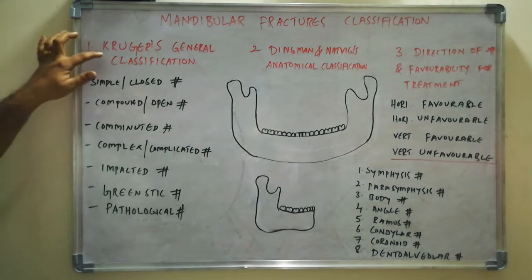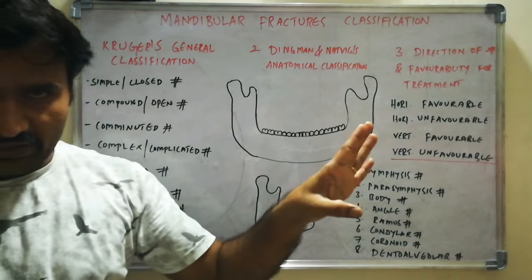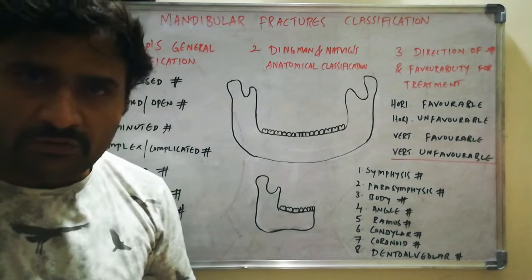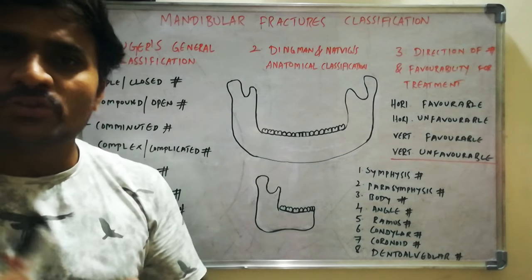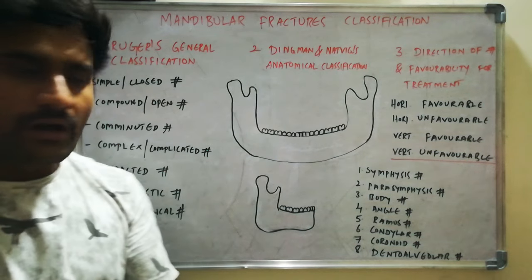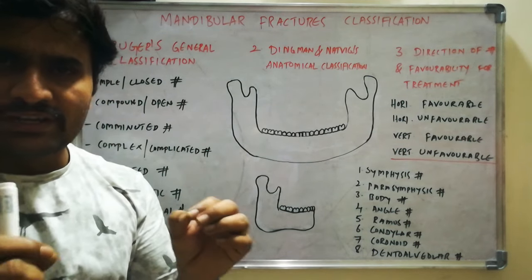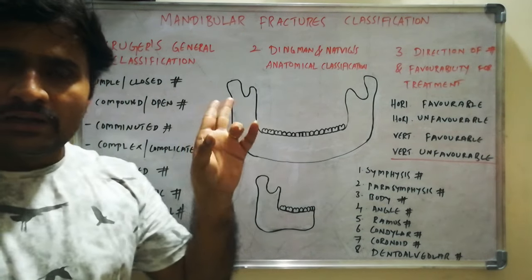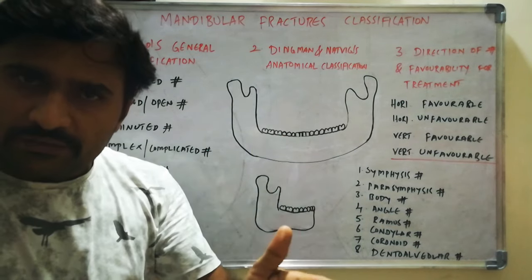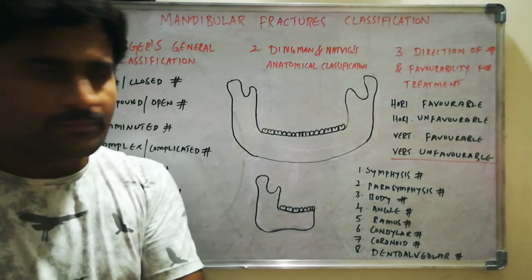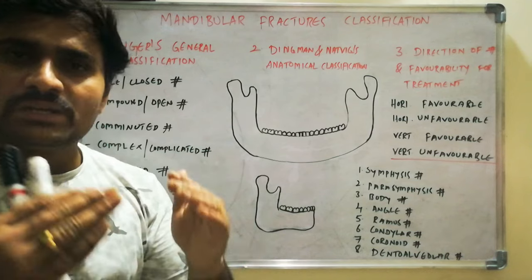Under Kruger's general classification there are seven categories. The first is simple or closed fracture — the fracture is not exposed to the external environment. Fractures of the mandibular condyle are generally simple or closed. The second is compound or open fracture — the opposite of simple, communicating with the intraoral cavity or external environment. Third is comminuted fracture, where one sub-unit of the mandible is divided into multiple pieces due to multiple fracture lines.